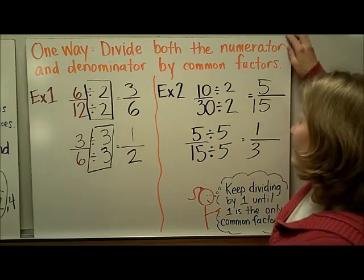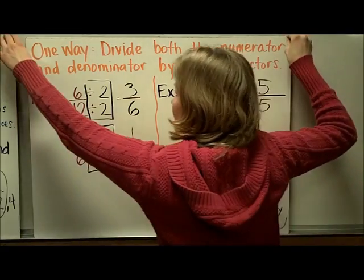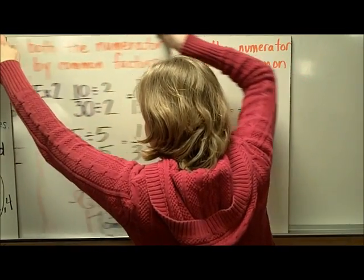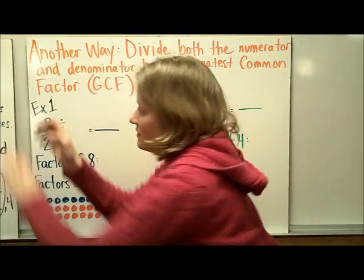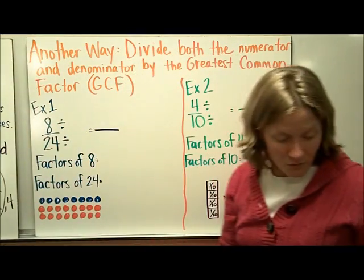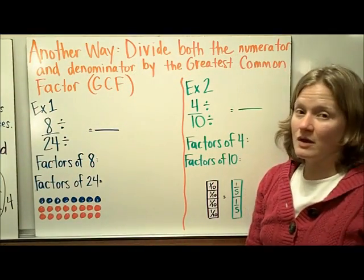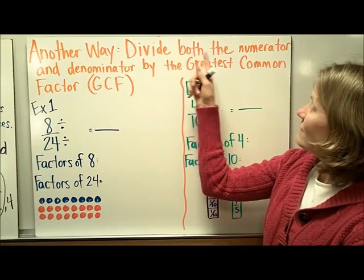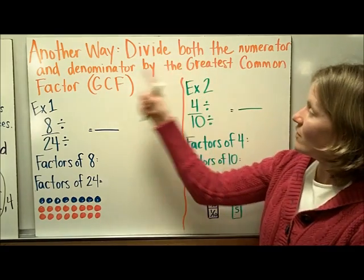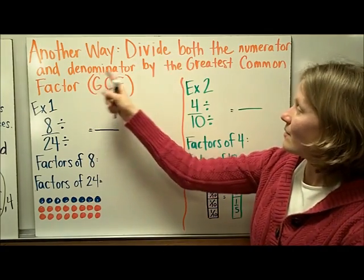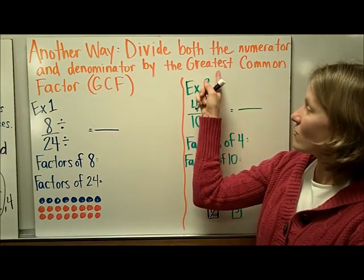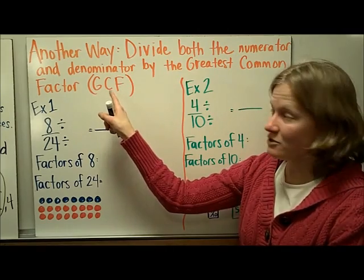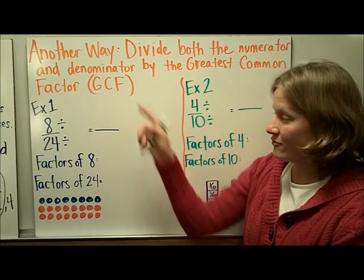This is in simplest form. There's another way that you can also simplify fractions, and that is to divide both the numerator and the denominator by their greatest common factor — we're going to abbreviate that GCF.